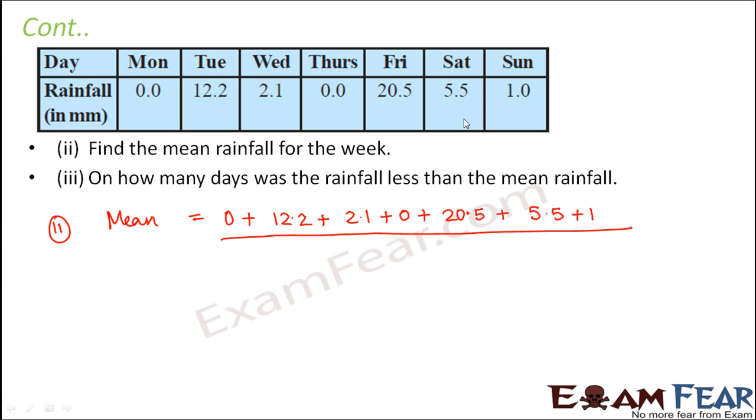Divided by how many days is the data given? 1, 2, 3, 4, 5, 6, 7. So this divided by 7. The sum comes out to be 41.3 divided by 7, which is equal to 5.9 mm. So this would be the average rainfall for the week.